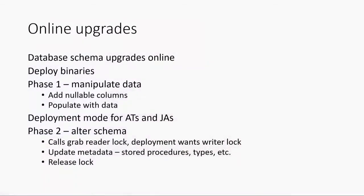We go into what's called deployment mode for the application tiers and the job agents. When they make a call to the database, they grab a reader lock on the schema. The job agents and the ATs are effectively readers of the schema. Meanwhile, the upgrade itself is the schema writer, and it's trying to grab a writer lock. So there's this dance in the code where every time a call comes from the AT or a job agent into the SQL database, it grabs the reader lock on the schema. Meanwhile, the upgrade is sitting there trying to find a moment to grab the writer lock.